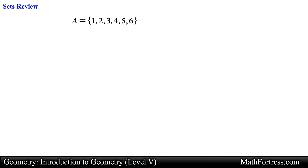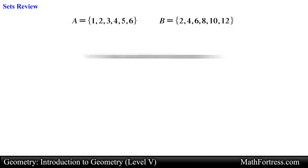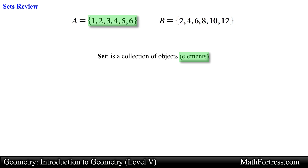Say I have two distinct sets, let's call them set A and set B. Recall that a set is a collection of objects. These objects are referred to as the elements of the set. In this example the numbers 1, 2, 3, 4, 5, and 6 are the elements of set A.